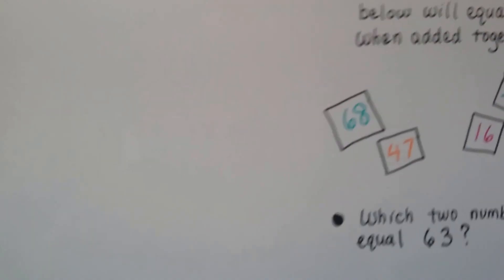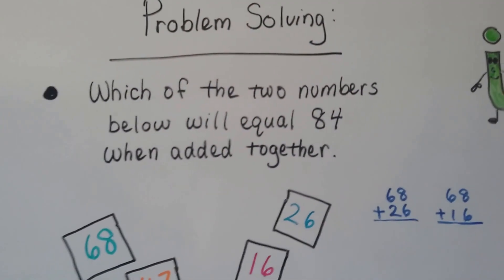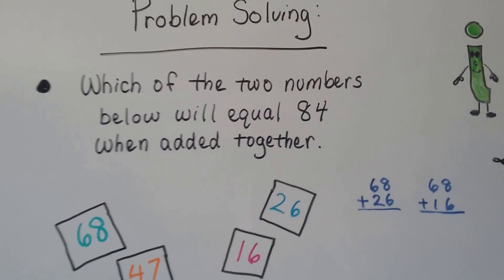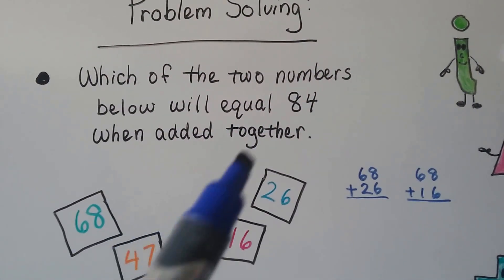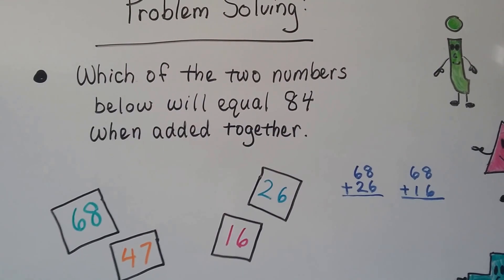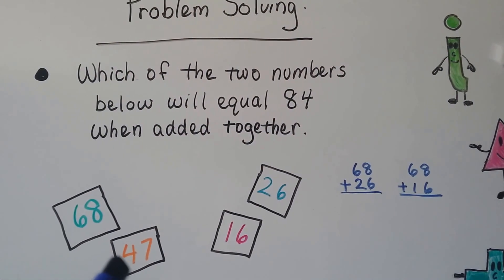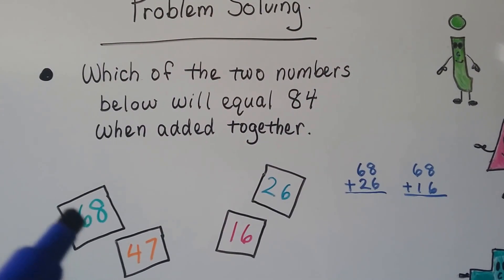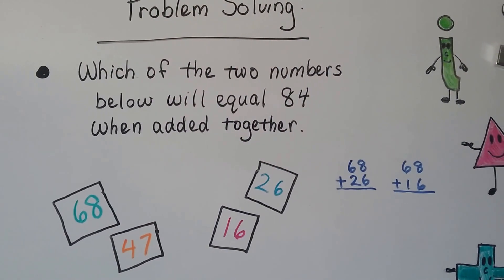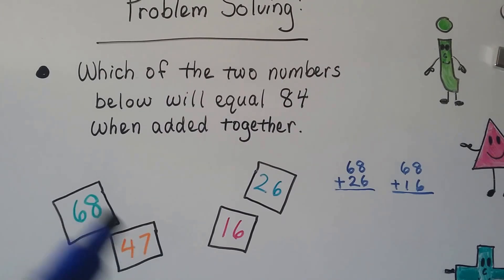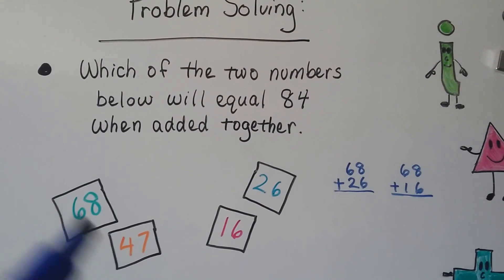Let's try problem solving. Which of the 2 numbers below will equal 84 when added together? We have 4 numbers here, and when 2 of them are added together they're going to equal 84. We have a 60, 8 and a 47. When you add 60 and 40, even ignoring the ones, that's going to be 100 something. So we know it's not these two.